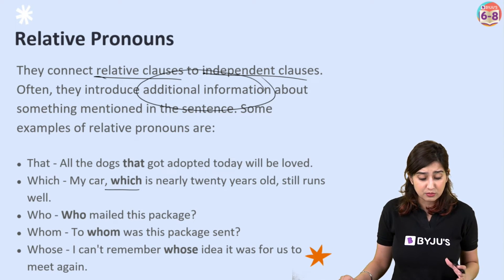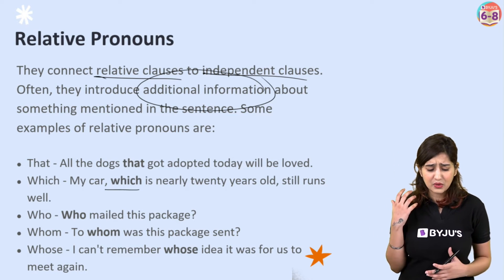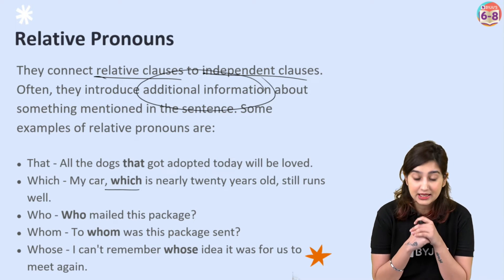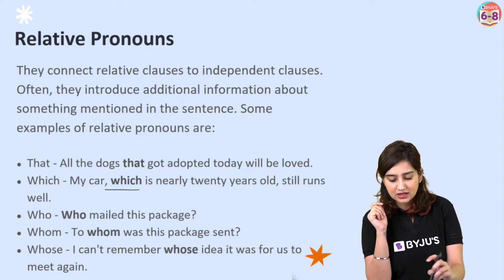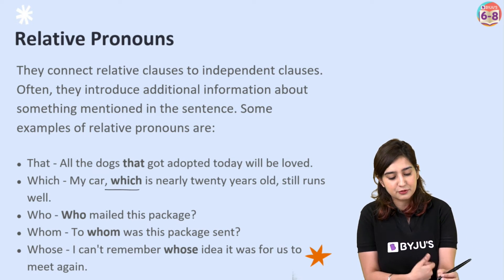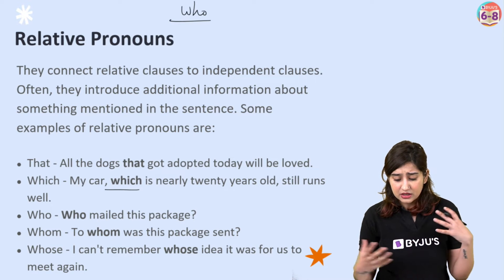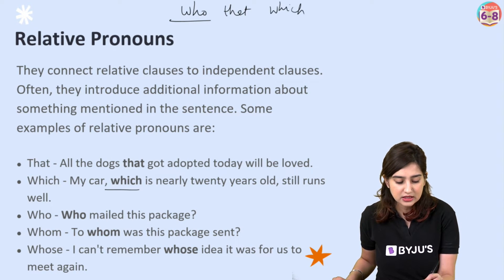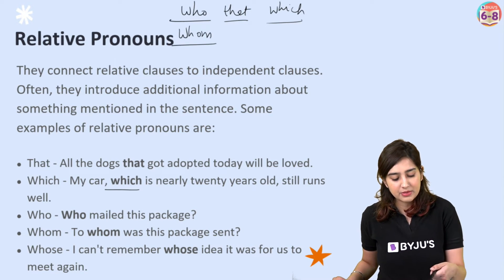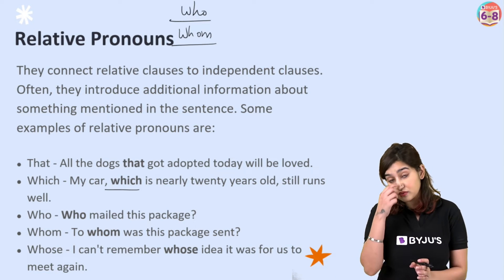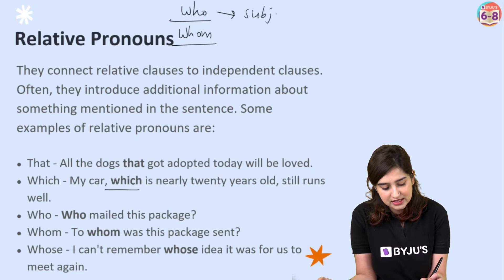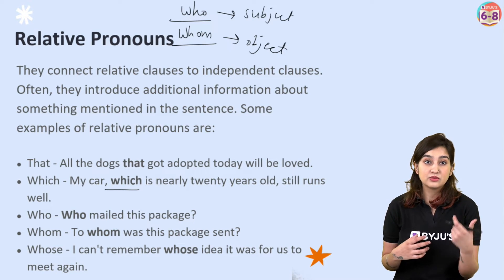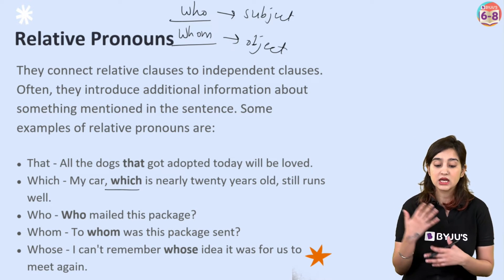Who: 'Who mailed this package?' Whom: 'To whom was this package sent?' And whose: 'I can't remember whose idea it was for us to meet again.' Whenever we are referring to people in this additional information, hum who use kar lenge. Jabhi hum refer kar rahe kisi animal ko ya kisi thing ko, toh hum 'that' ya 'which' use kar lenge — generally speaking. Now, who or whom — mein ek sar confusion hota hai. Simple hai: who is a subject pronoun and whom is an object pronoun. Jo subject ki jagah lega usko who replace karega; jo object ki jagah lega usko whom replace karega.